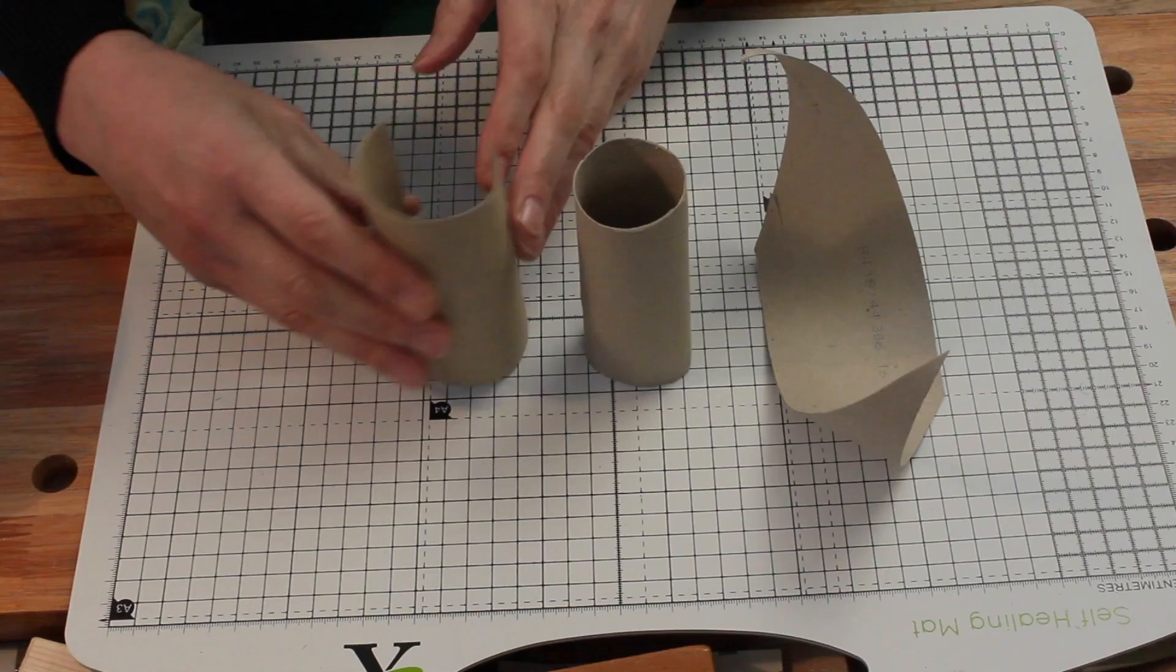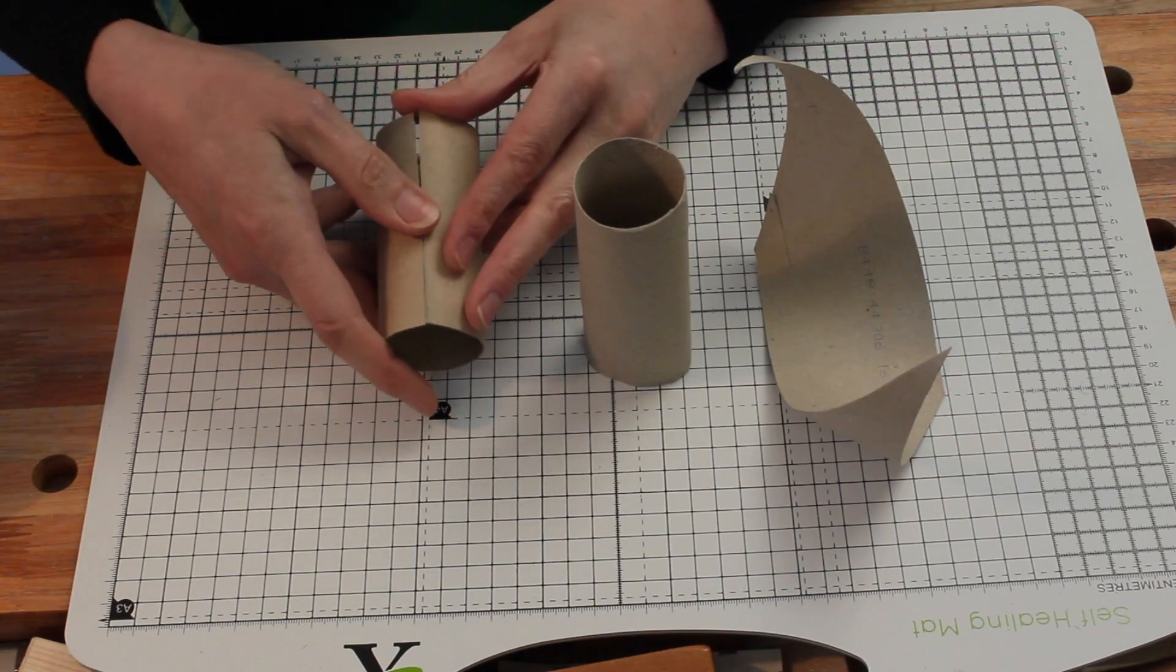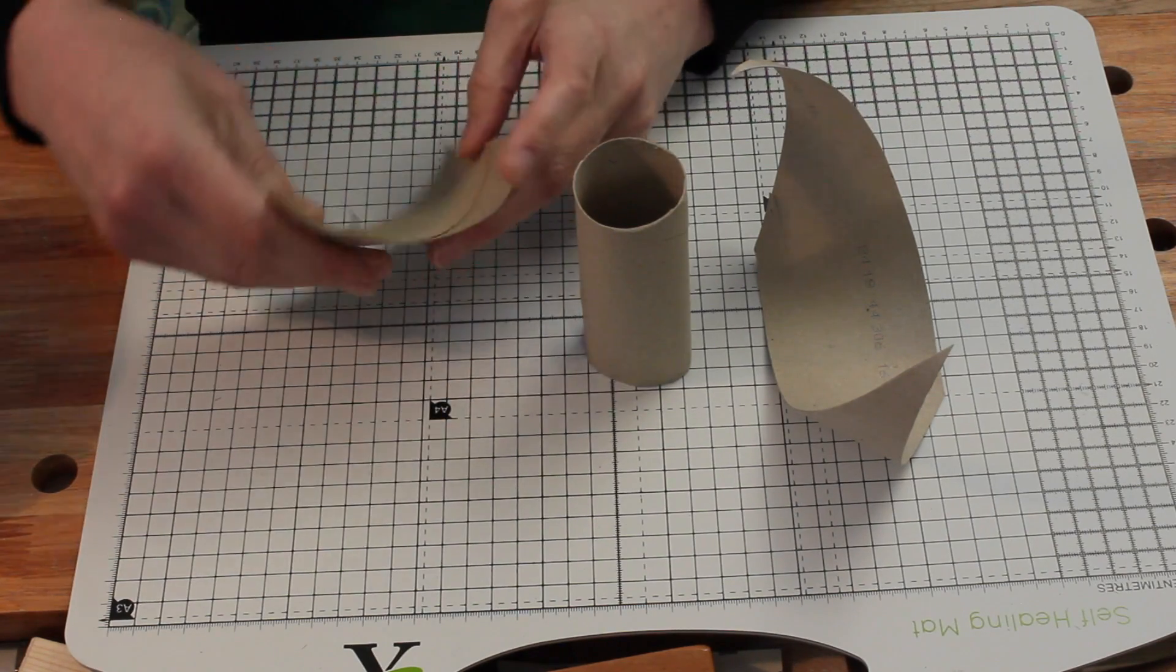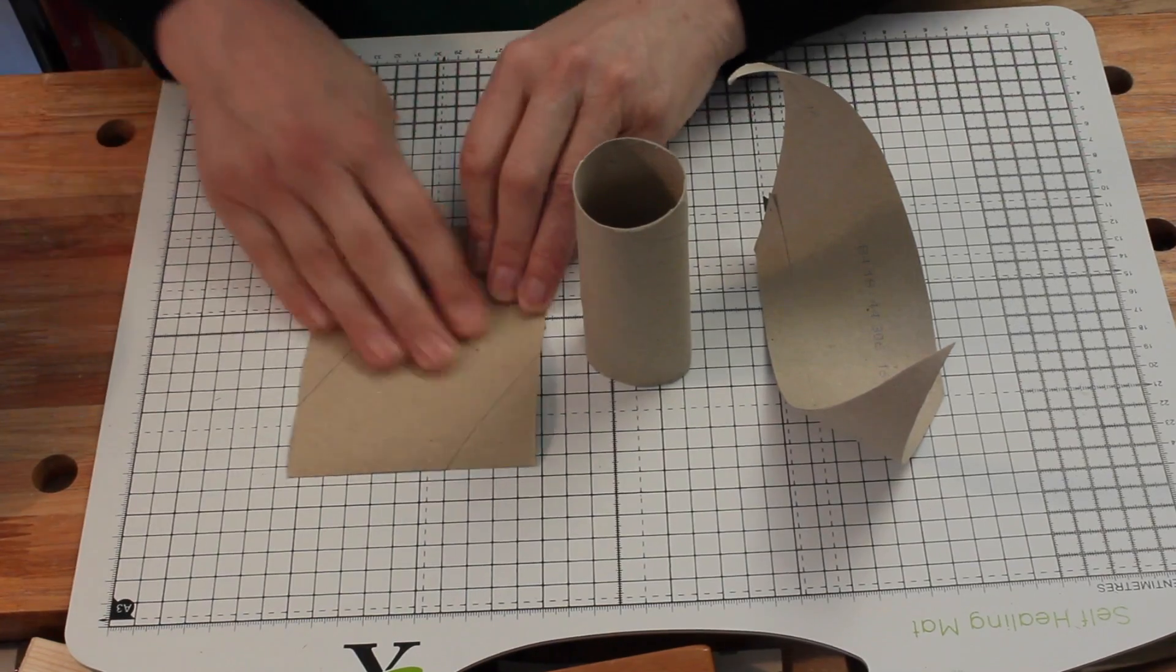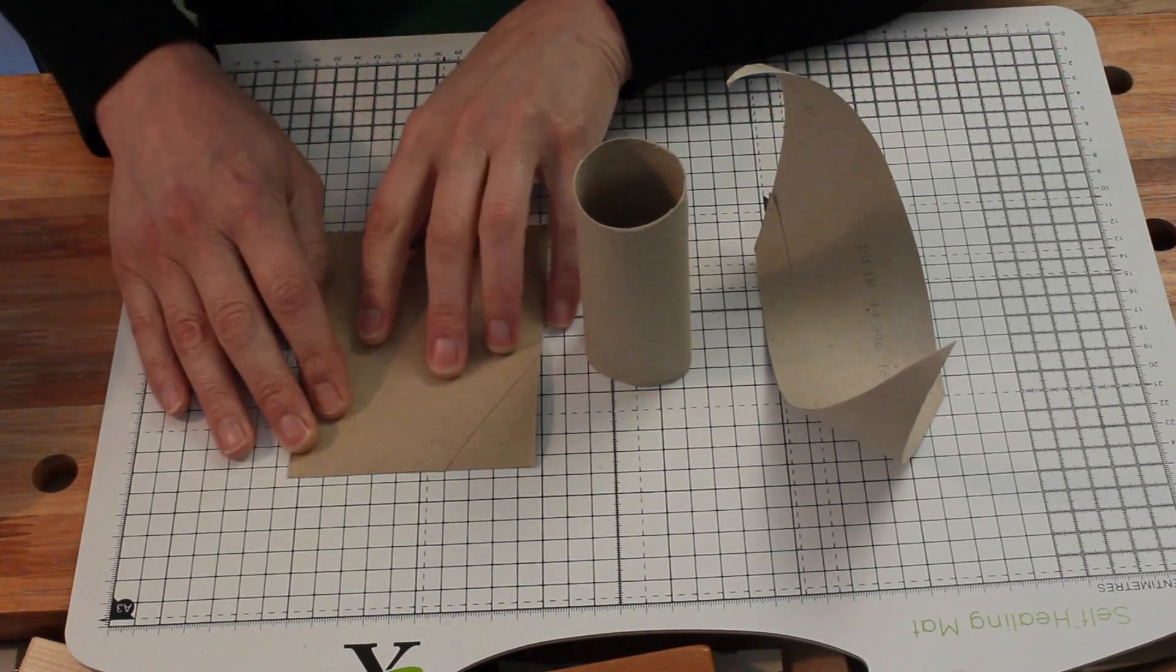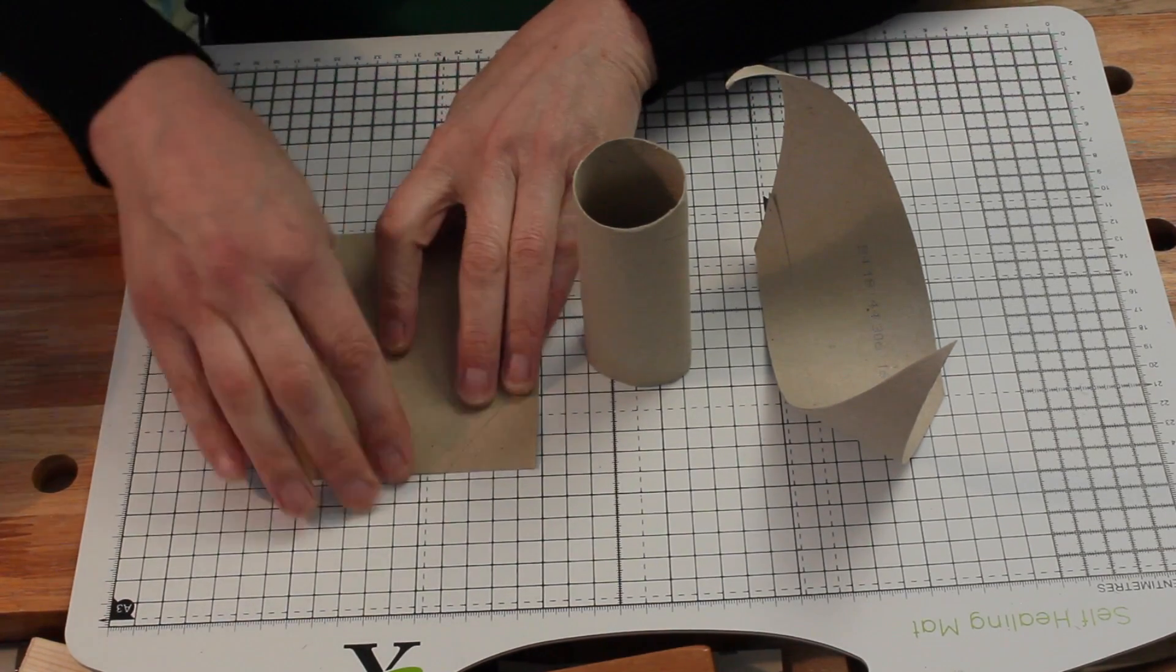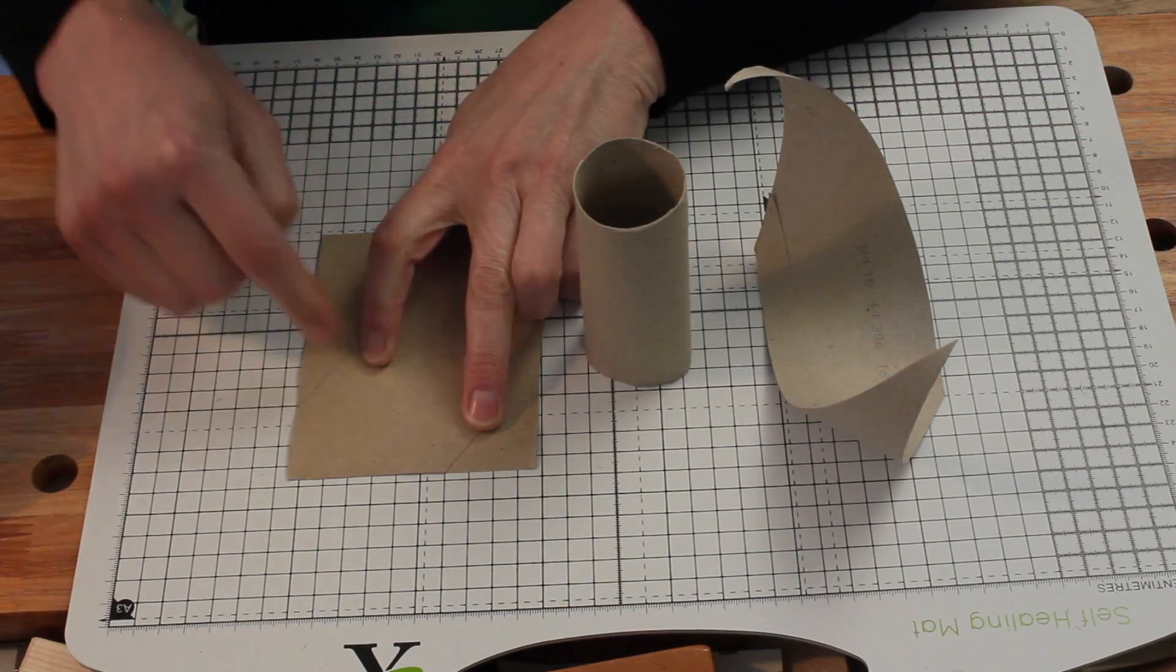So if we take our toilet roll and this time we cut it just straight up the side and open it out. Now what we have is we can see a simple way of calculating the total area.